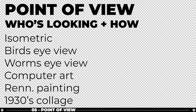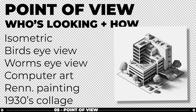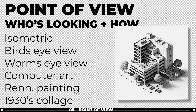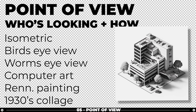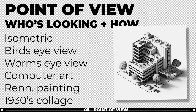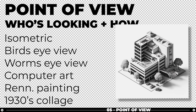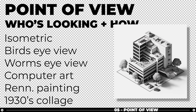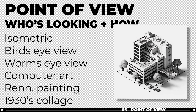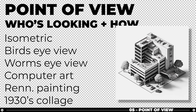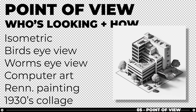POV, or point of view: Choose how the image is perceived and who is perceiving it. Is it an isometric, a bird's eye view, worm's eye view, or a construction drawing on a computer screen? Try to include a date and time that the image is in — for instance, if it should have qualities of a Renaissance painting, or a collage from the 1930s.